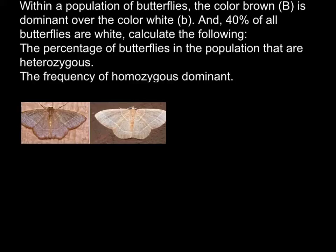The percentage of butterflies in the population that are heterozygous, and the frequency of the homozygous dominant. And as you see, brown phenotype can be produced by two genotypes: one is capital B capital B, and another one is capital B small b — so one is homozygous dominant and another one heterozygous.